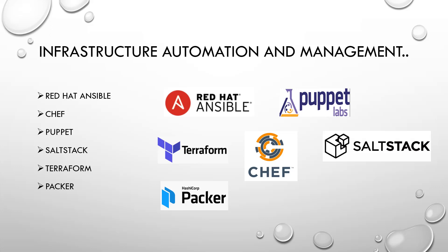Packer is used to create custom AMIs — Amazon Machine Images, which are essentially an OS. You can take a base OS like Windows 10, customize it by installing Java or .NET, and create a new OS with those customizations. You can then upload it to the Amazon Marketplace so others can download your customized OS without needing to install any additional software themselves.